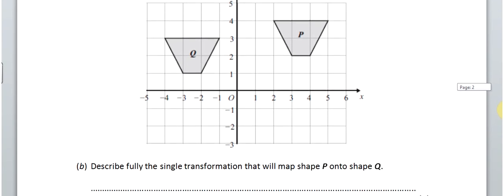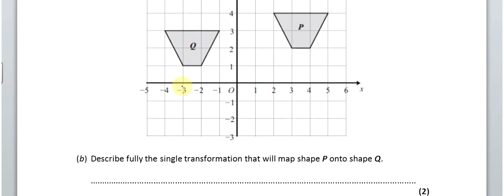Now, second part. Describe fully the single transformation that will map shape P onto shape Q. Now, this is a terror question. And thereafter, there's two marks. The first one is for the right word. And these are the words you've either going to write. It's either going to be a translate, an enlarge, a rotate, or a reflect. So, going from P onto Q. Well, we can rule out enlargement, can't we, straight away. Because it's not that one.